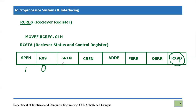The next bit is the single receive enable bit, meaning you want to receive only a single bit of information. This is related to synchronous transmission, and since in this course we are only dealing with asynchronous reception, we will make it zero. This bit is relevant to synchronous serial port communication.